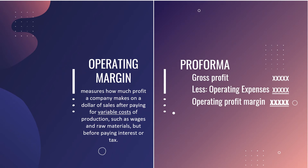Next is the operating profit margin rate. The operating profit margin is the second level of revenue in the income statement. It measures how much profit the company makes on a dollar or peso of sales after paying for variable costs of production such as wages and raw materials, but before paying interest or taxes — expenses incurred during a particular period only and not expected to provide benefits to any future period.